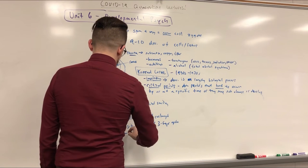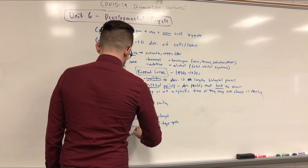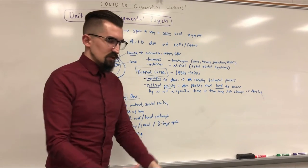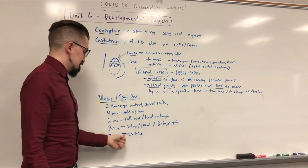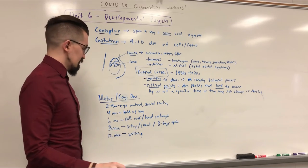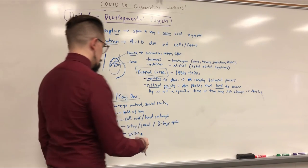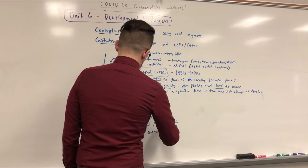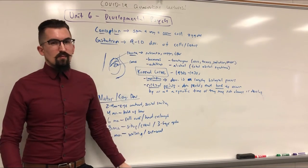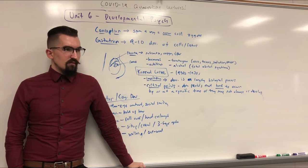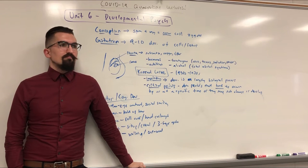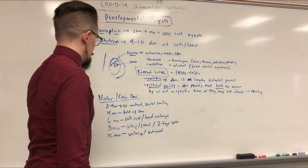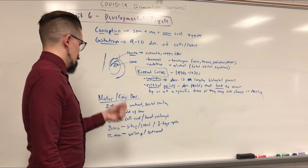By twelve months they should be walking — assisted or unassisted. Some kids develop that super early, others later. This is also the point where they should be using at least one word. They should ideally be able to say one or two words at least by the one-year mark. You can have speech delays and still be okay, but if it hasn't happened yet you should start looking into a speech therapist — usually the state provides those.